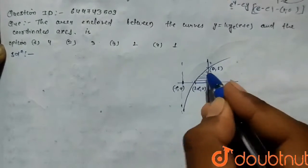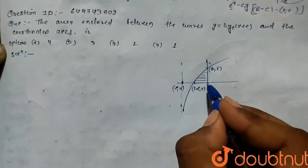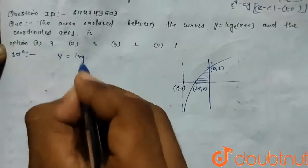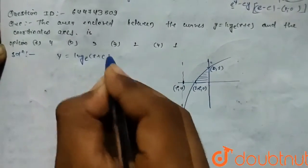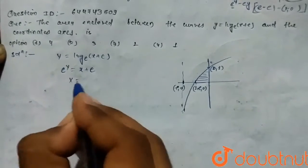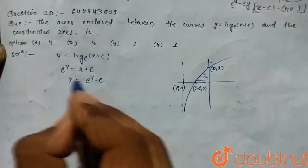(x + e), so e^y equals x + e, which means x equals e^y - e.